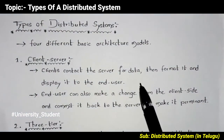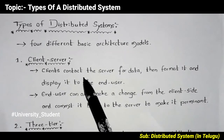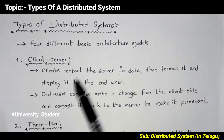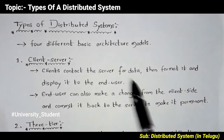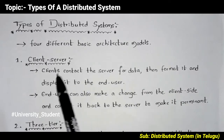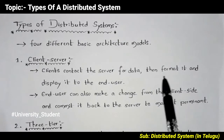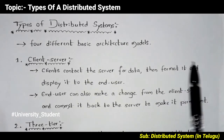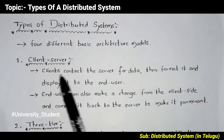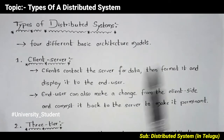The first one is client-server. The client can request the server for information, and the server will respond to the client. Clients contact the server for data, which is then formatted and displayed to the end user.